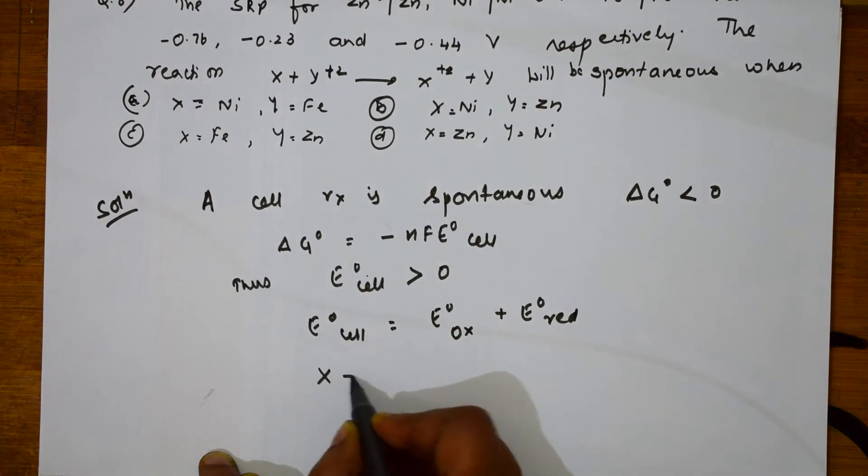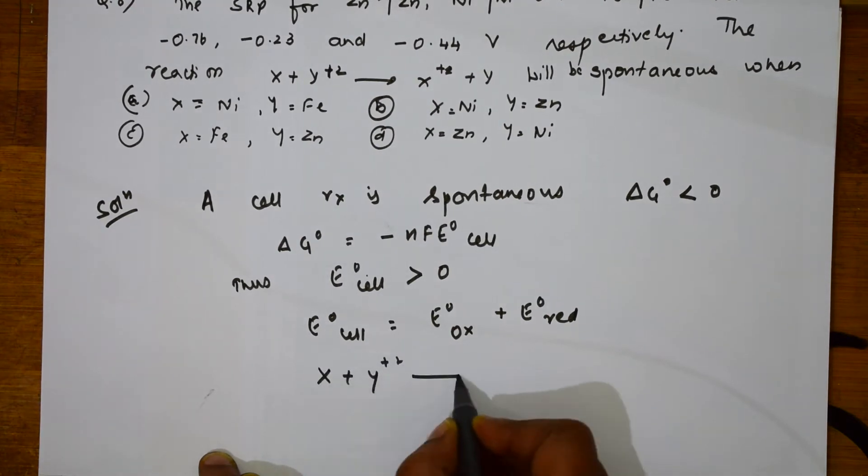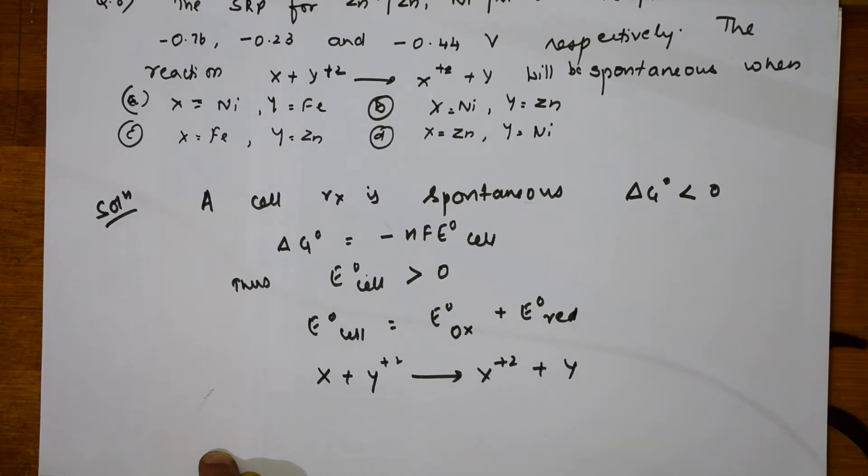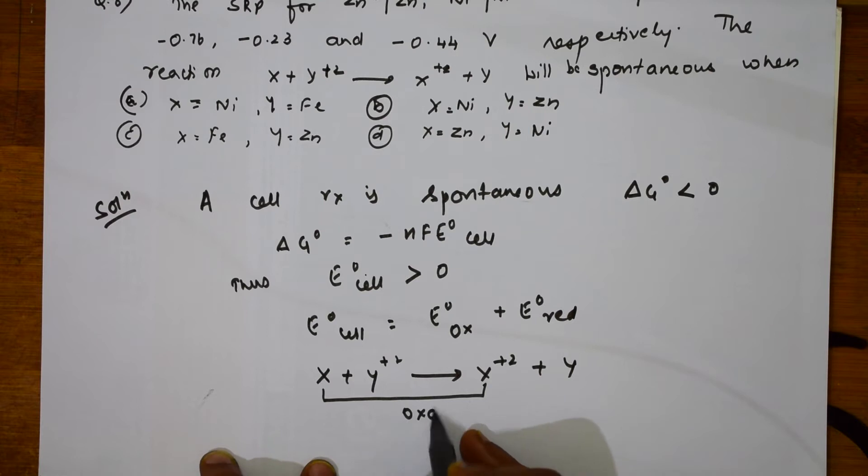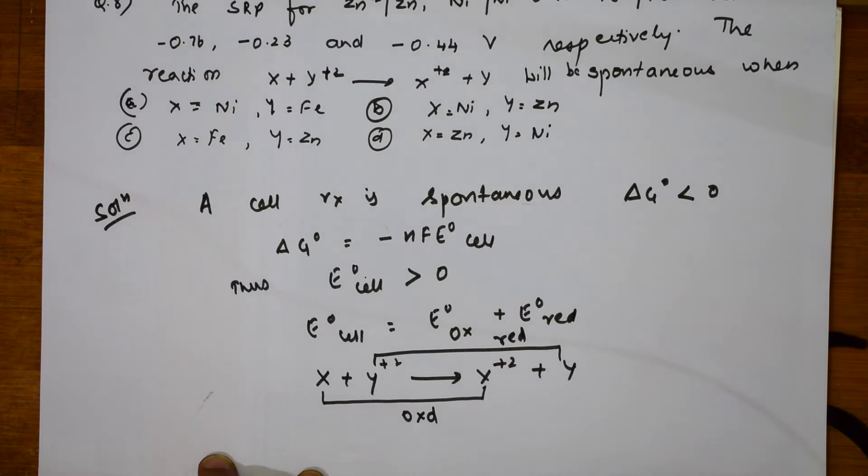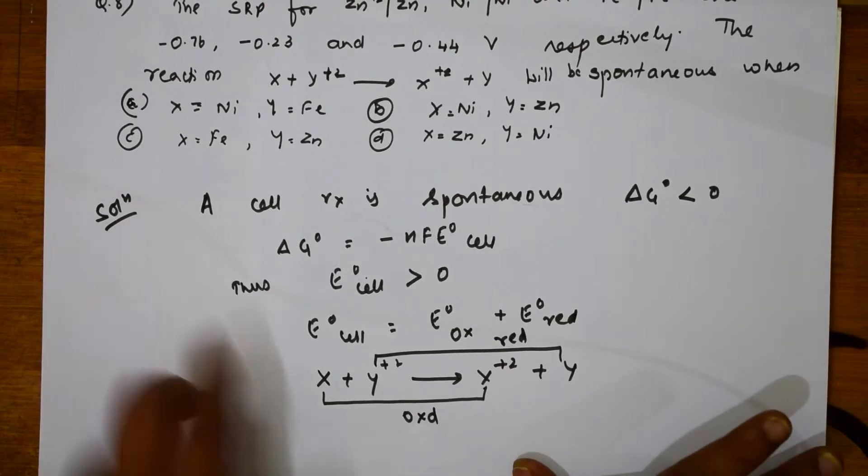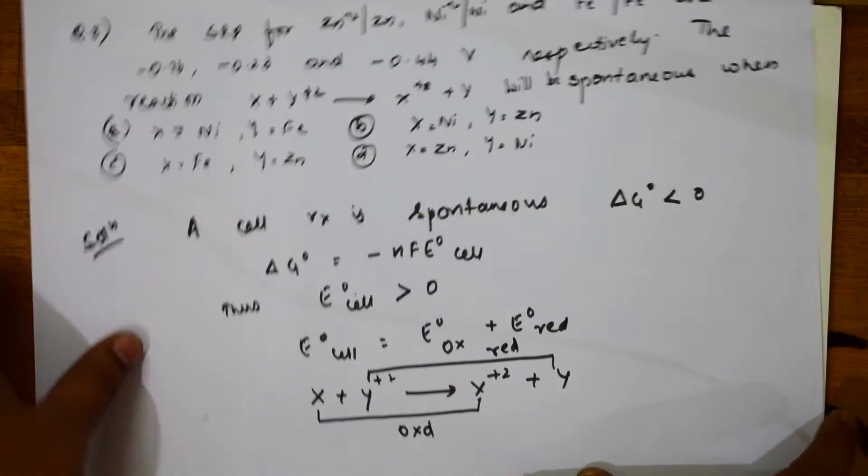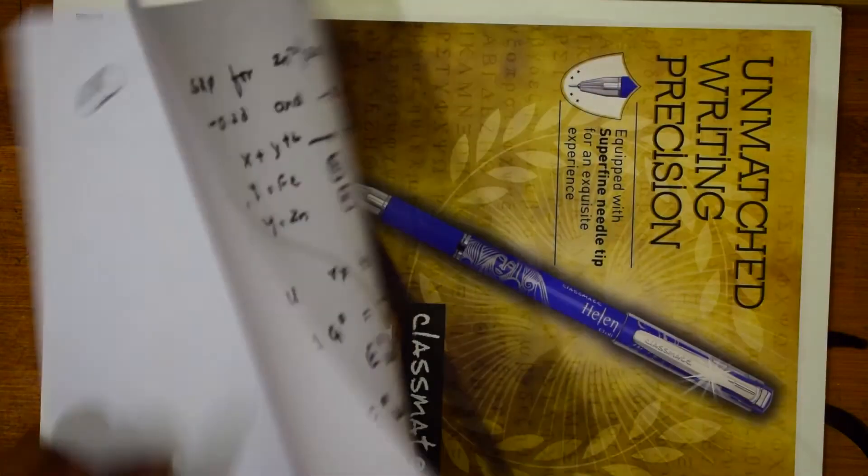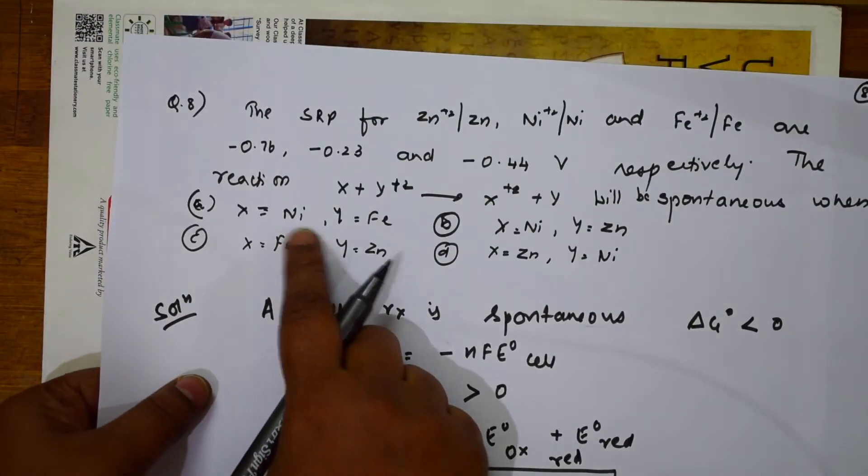With this data let me pick up this particular formula and start. What is this? X + Y²⁺ giving me X²⁺ + Y. From X it is losing electrons, so this is oxidation process. Here this is gaining electrons, so this is the reduction process. Let me start with the first one. First condition.